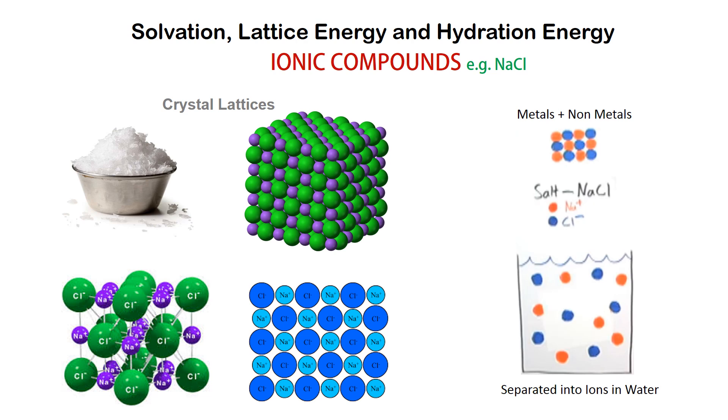We know that ionic compounds have crystal lattices with positive ions and negative ions. And when these are dissolved in water, these break into the positive ions and negative ions in water.